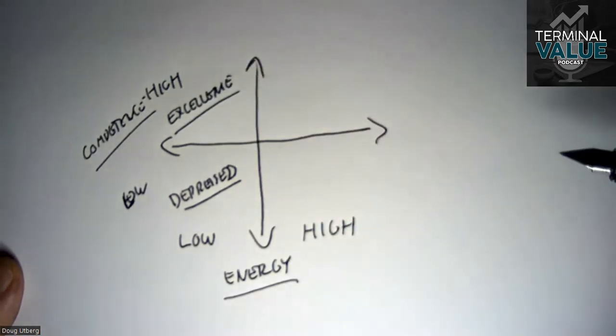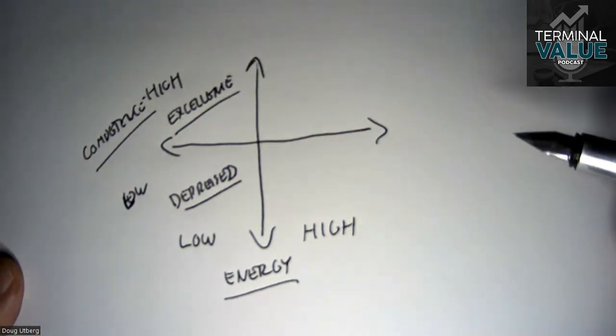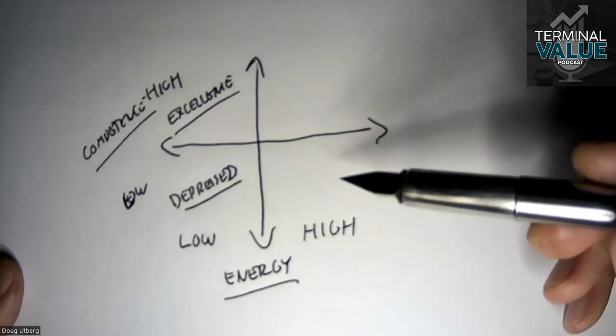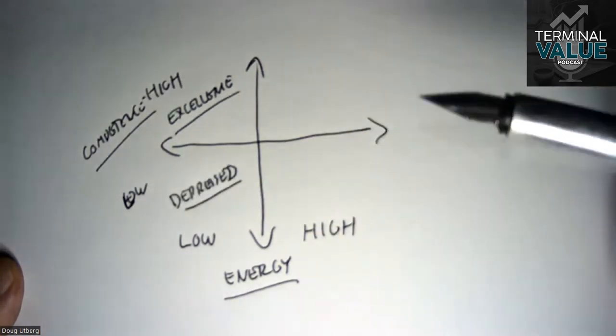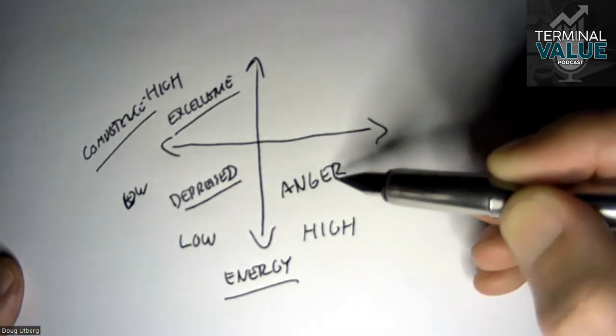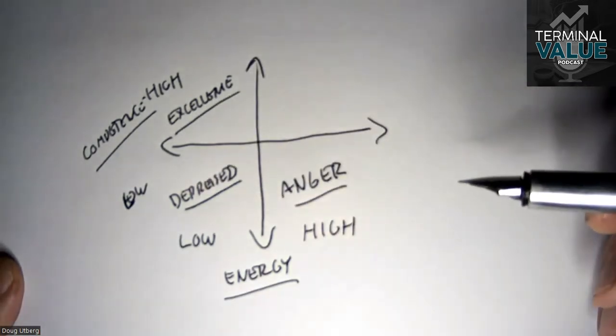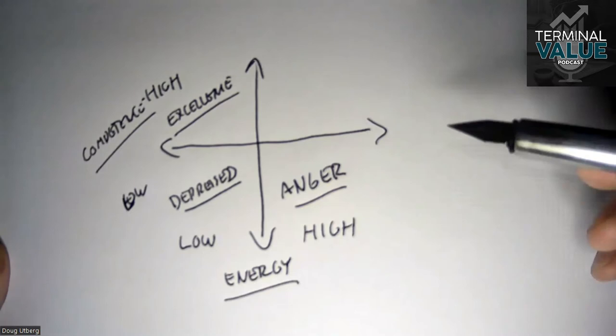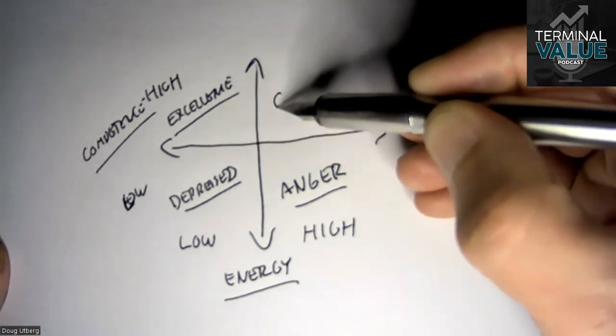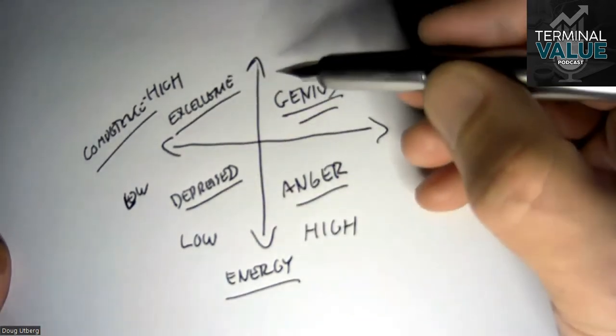On the other hand, we have a situation where we're highly enthusiastic and energetic about something, but we're not very competent. This is what I call the anger zone, because it's the situation where we're working really hard on something but we're not very good at it, so it's very easy to become angry. In the upper right, we have the genius zone, where you have high competence and high energy.